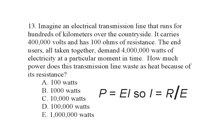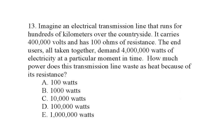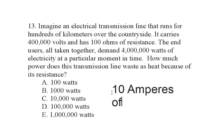We know the power in watts — that is 4 million watts. We know the voltage in volts — 400,000. It is easy enough to divide 4 million by 400,000 in our heads to find that the current is 10 amperes. This particular transmission line is carrying 10 amperes of current.